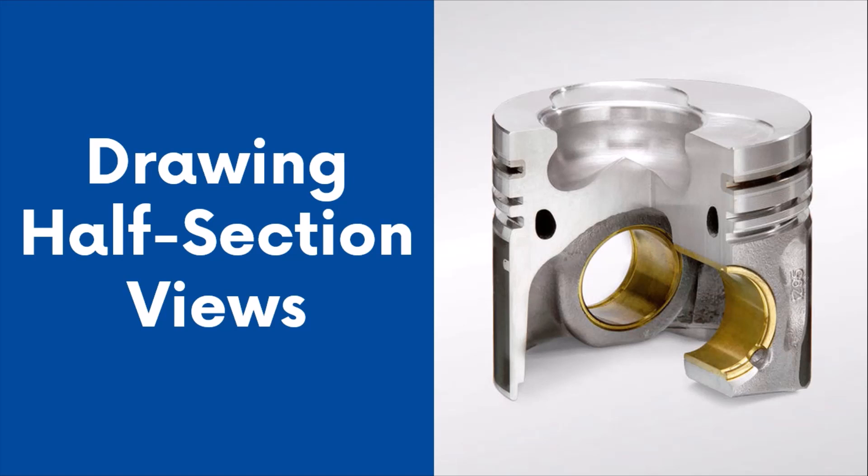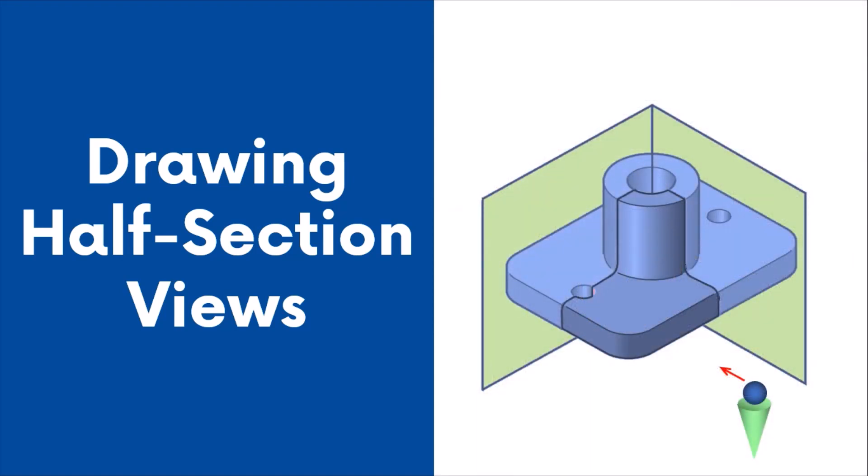This video demonstrates the basic steps required to draw a half-section view. An isometric view of a symmetrical part is shown here. A cutting plane cuts the object and removes one quarter of the part, as shown.